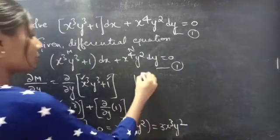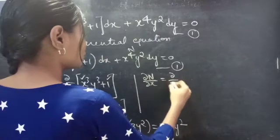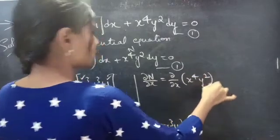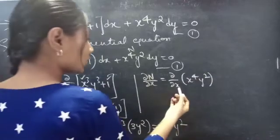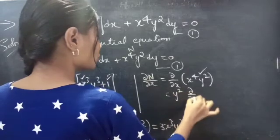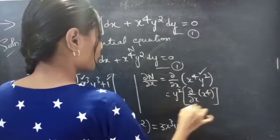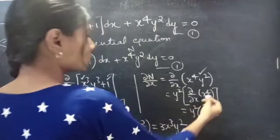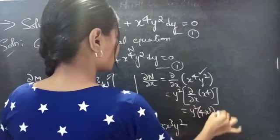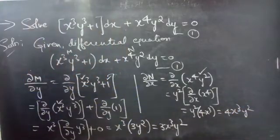Now let's find the partial derivative of N with respect to x: ∂N/∂x of x to the power 4 y-squared. Since we are doing partial derivative with respect to x, y-squared is treated as constant. So ∂N/∂x equals y-squared times ∂(x⁴)/∂x equals y-squared times 4x-cubed equals 4x-cubed y-squared.